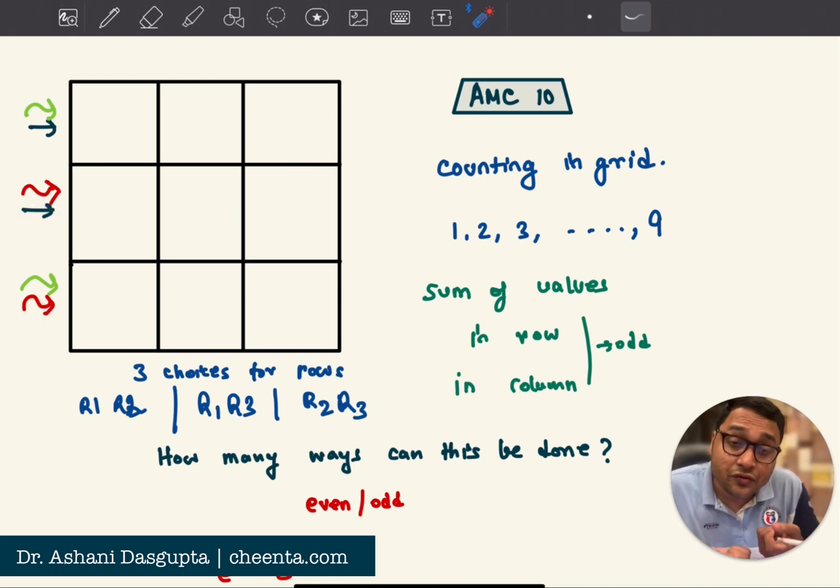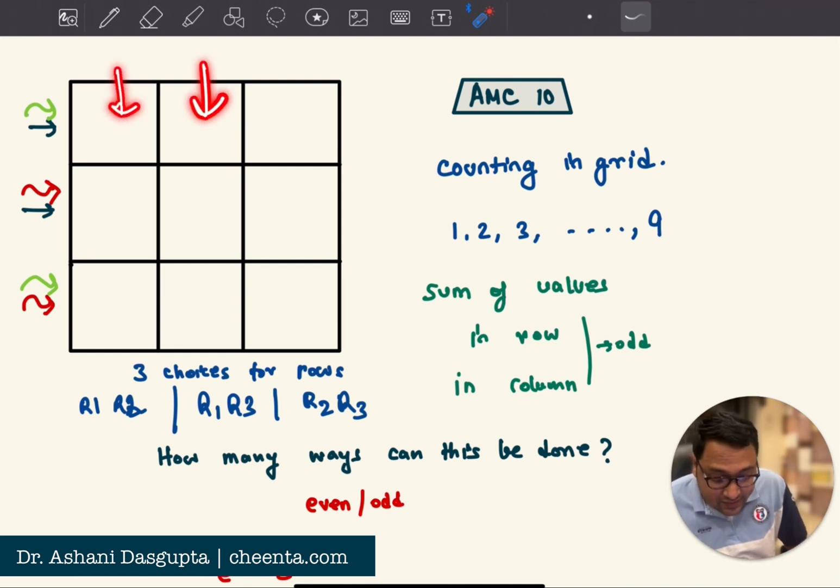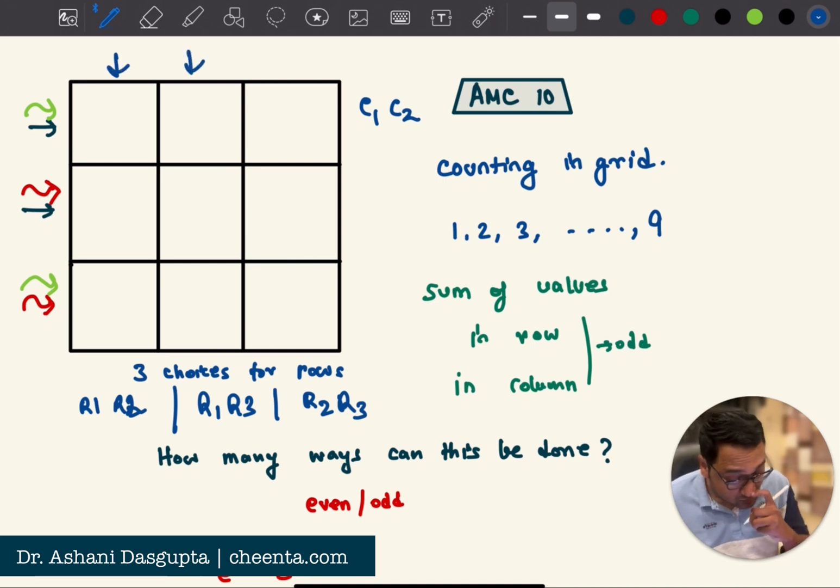The same thing goes for the columns. So there are three choices of how you can choose the pair of columns in which the even numbers will appear. It could be column one, column two. So these two columns. Or, it could be column one, column three. So the first one is red and the third one. Or, it could be column two, column three. So it could be second one and the third one. So these are the three choices for columns for the even numbers.